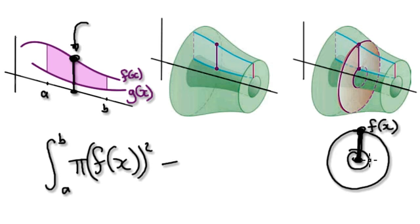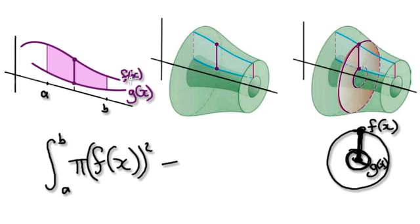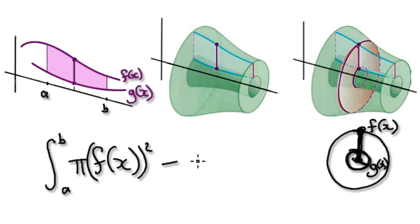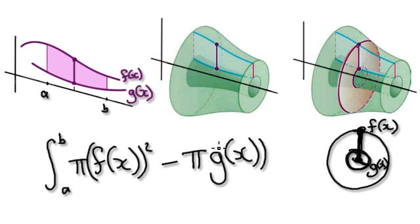Then we need to take away the small area. The radius of the small circle is g(x) — from here to here is g(x). So the area of the big circle minus the area of the small circle gives us π·[f(x)]² − π·[g(x)]². That gives us the area of the washer.